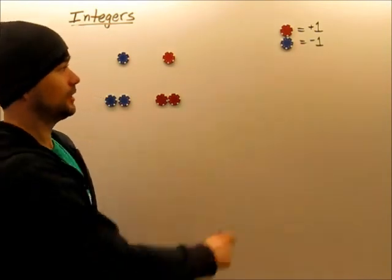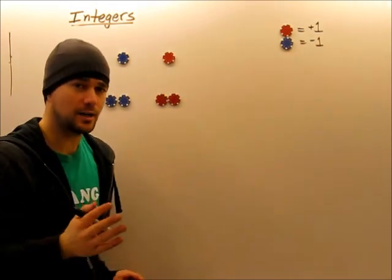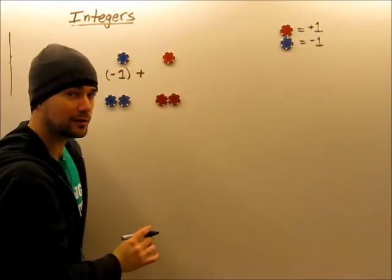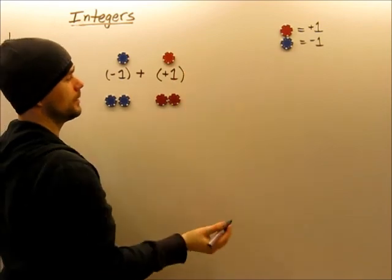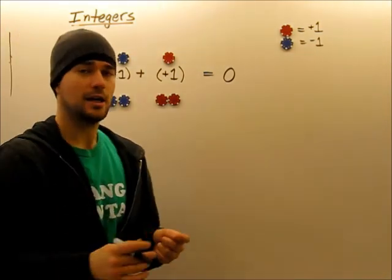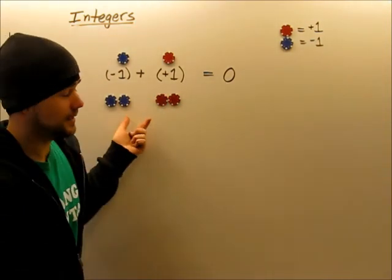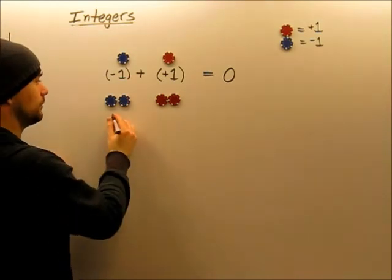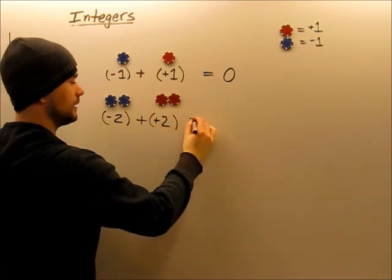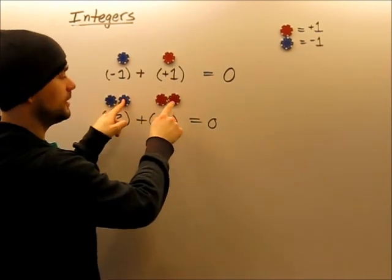So what that would look like mathematically using counters is like this. If I had this combined with this. Don't forget, combined with is the plus sign. We have negative one combined with, see the last video, positive one. And we know already that that is going to equal zero. They zero each other out. Why? Because negative one is the opposite of positive one.